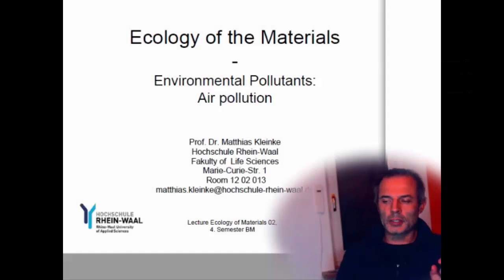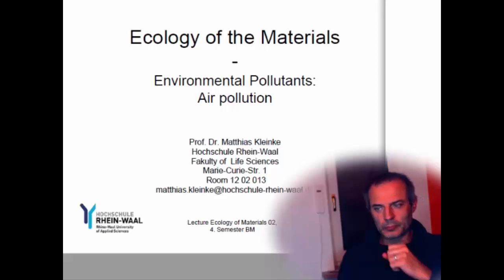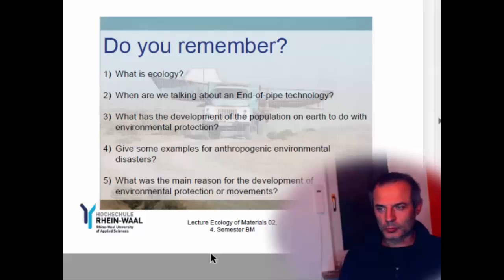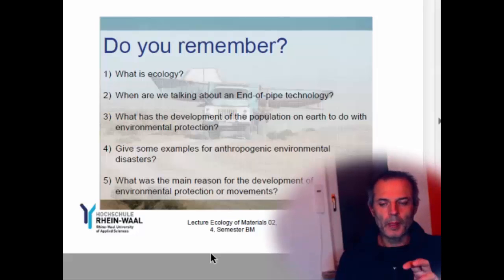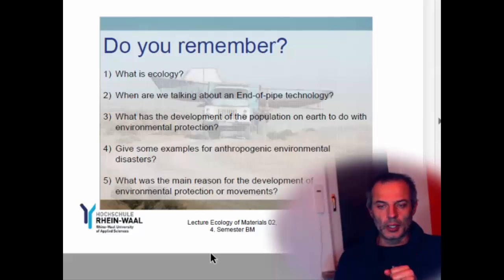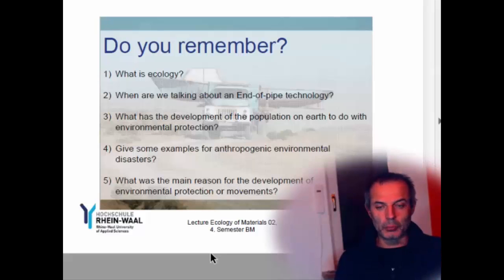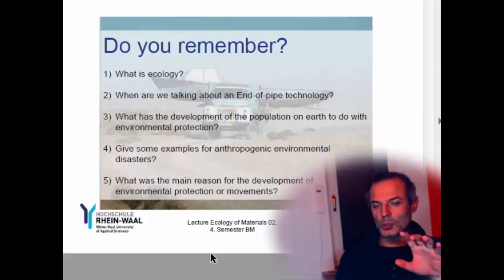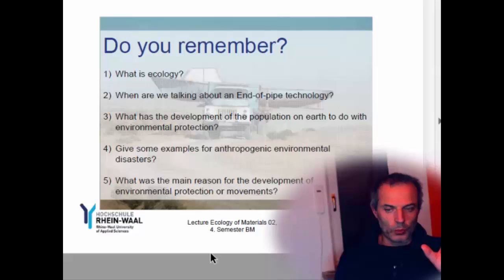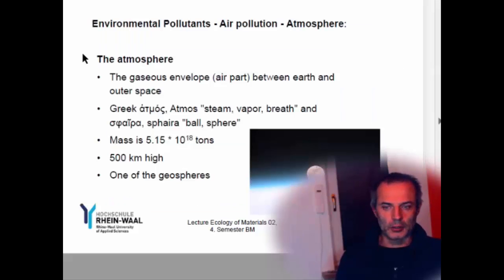Welcome back. We're on to our second topic, which is our first main topic: air pollution. A quick recap — what is ecology? What is end-of-pipe technology as opposed to other types? What happened with the increase in population on Earth, and how does that make it more or less important that we do something about the environment? Give some examples of anthropogenic environmental disasters. What's the main reason for the development of environmental protection movements?